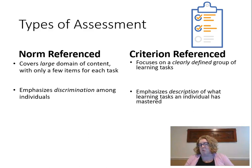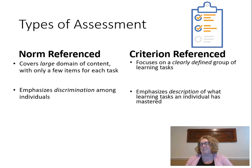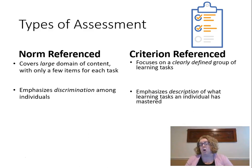When designing a norm-referenced test, I'm really focused on items that will discriminate between individuals — does this tell the difference between someone who knows and someone who doesn't? Whereas in a criterion-referenced test, I'm really focused on the content of the question: does this content really represent the domain of interest and what I want students to know?